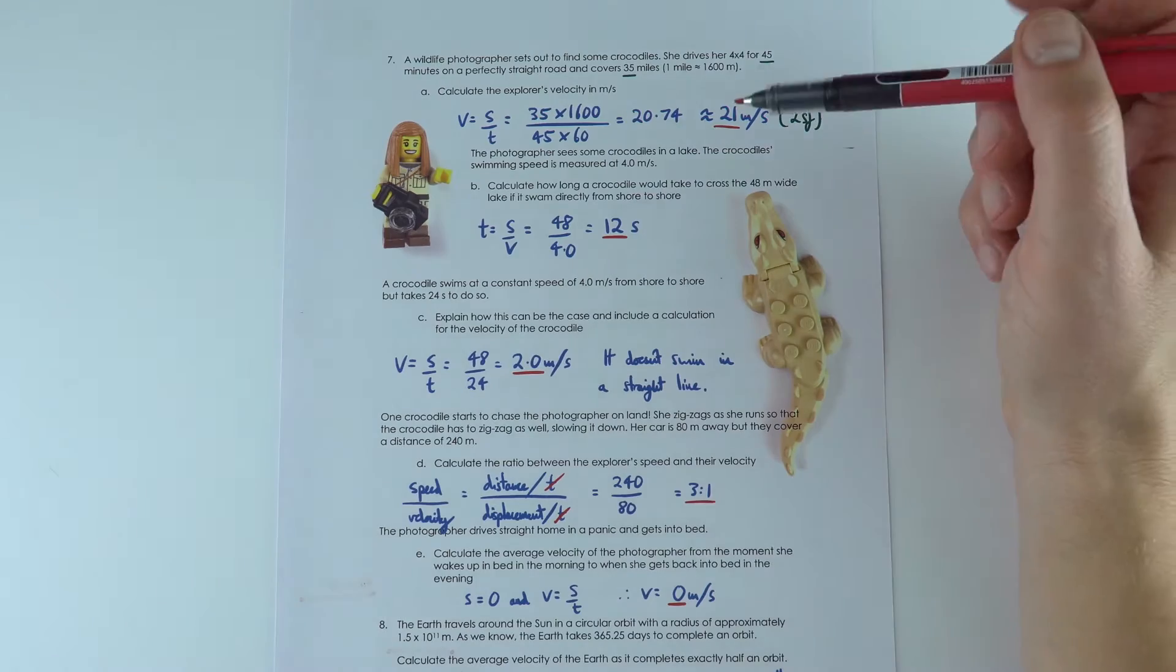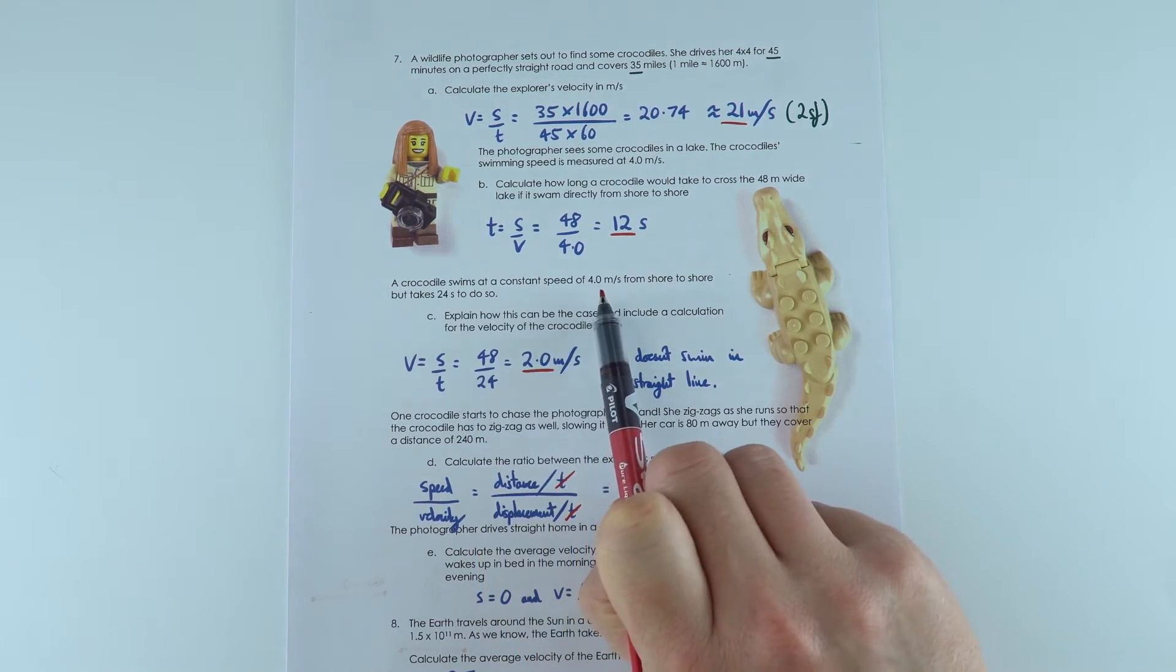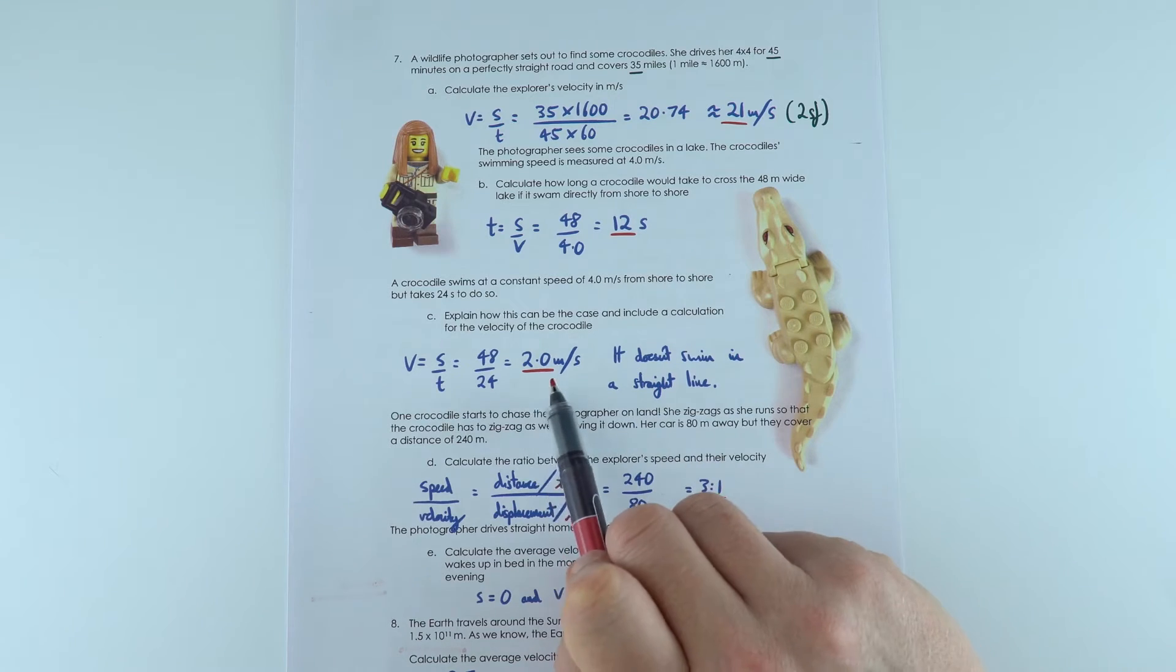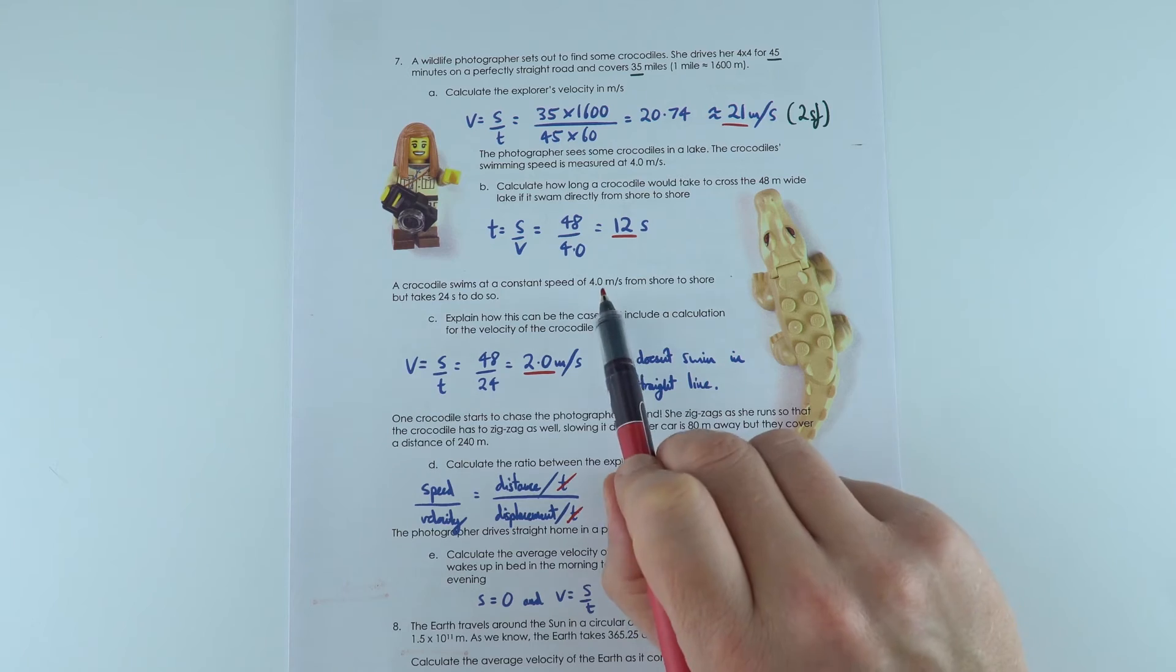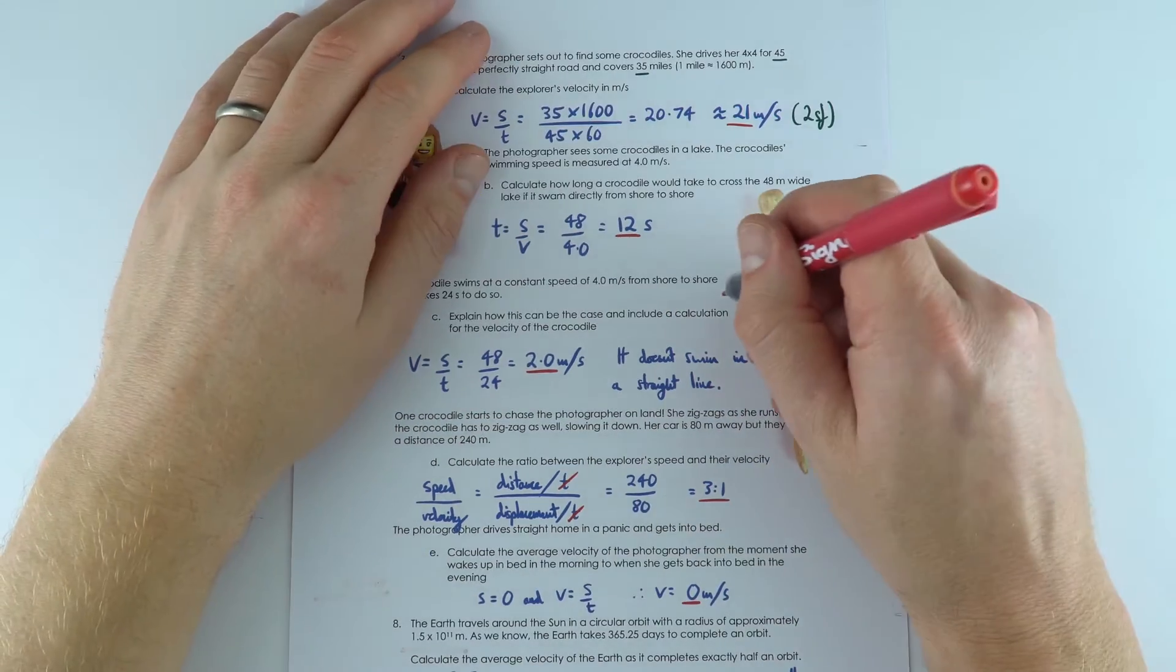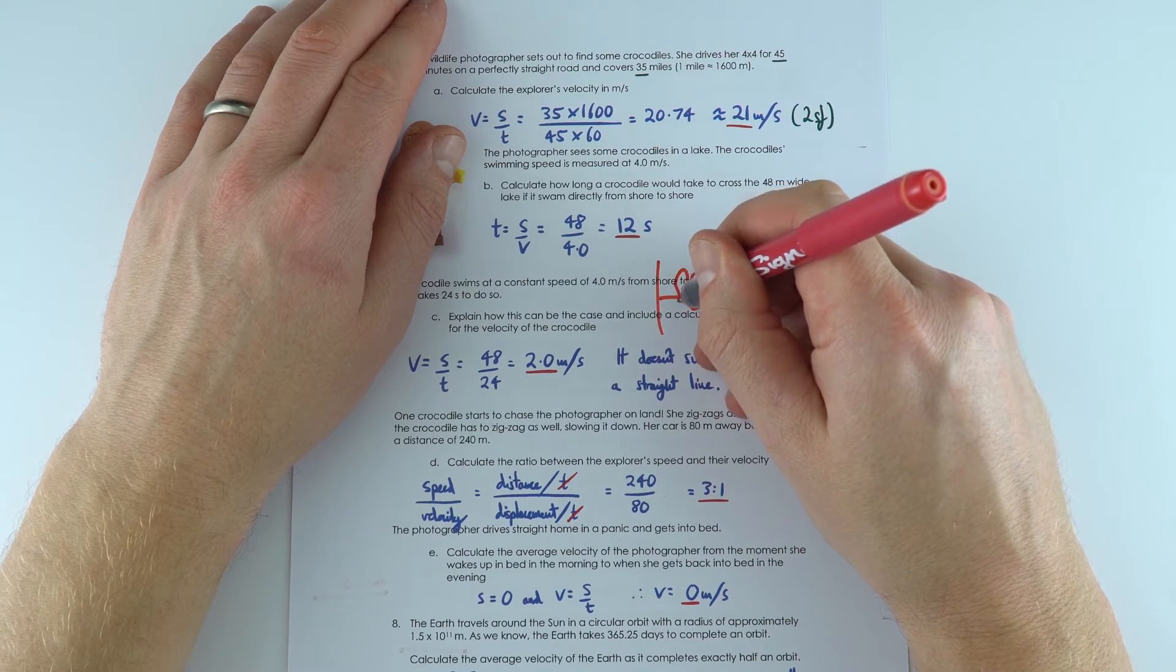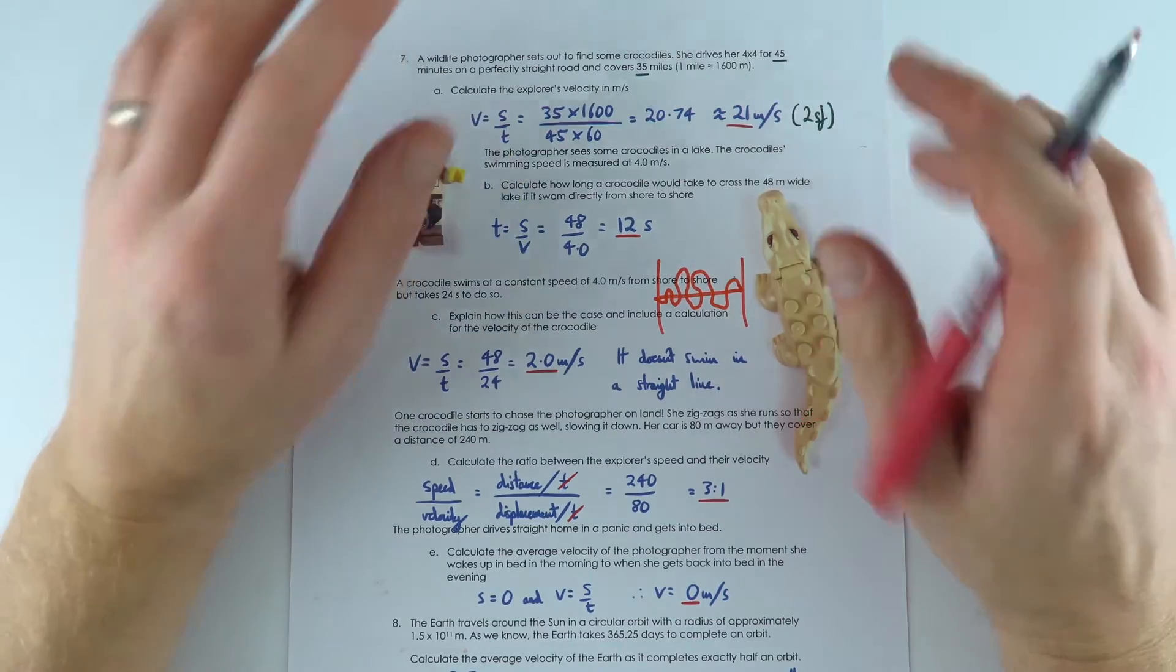But the next one, we say that the crocodile swims at a constant speed of 4 meters per second, but it takes 24 seconds to do so. How can that be? Well, basically, the velocity of the crocodile is 2 meters per second, but their speed is 4 meters per second. And that's because it might not be swimming in a straight line. So rather than going, imagine we had the two shores, rather than just going like this, the crocodile might be swimming like this. And even though it's going at 4 meters per second, its average velocity is 2 meters per second. A bit confusing.